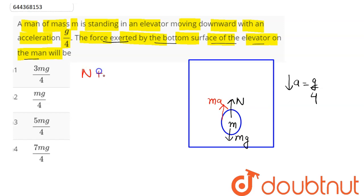So we can say here normal plus ma comes out here as mg. So we can say normal plus a here is our g by 4. So n plus mg by 4 equal to mg.